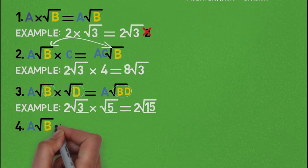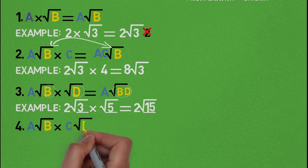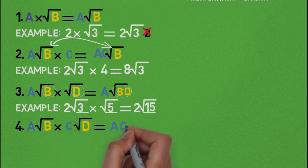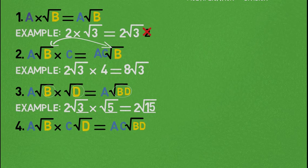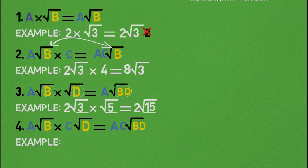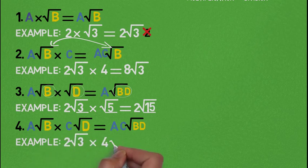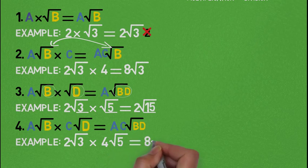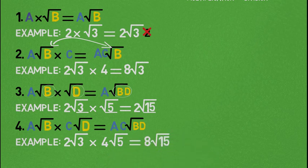Property number 4: A root B times C root D gives AC root BD. The color codes of the letters should help you understand — A multiplies C to give AC, and B multiplies D to give BD. An example is 2 root 3 multiplying 4 root 5, which gives us 8 root 15. 2 times 4 gives 8, and 3 times 5 gives 15.